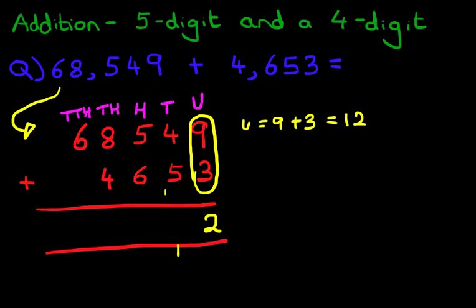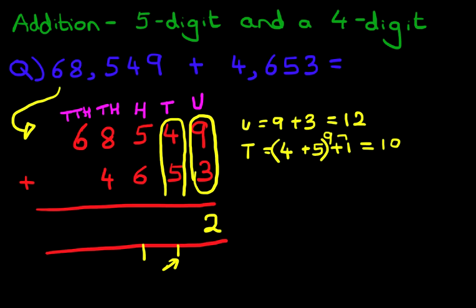We're now going to add the tens column. 4 and 5. And don't forget the 1 here. So we've got 4 plus 5 plus the 1 we are carrying over. The first two numbers, 4 plus 5 equal 9. 9 plus 1 is 10. So let's write that down. 1 here and 0 here.